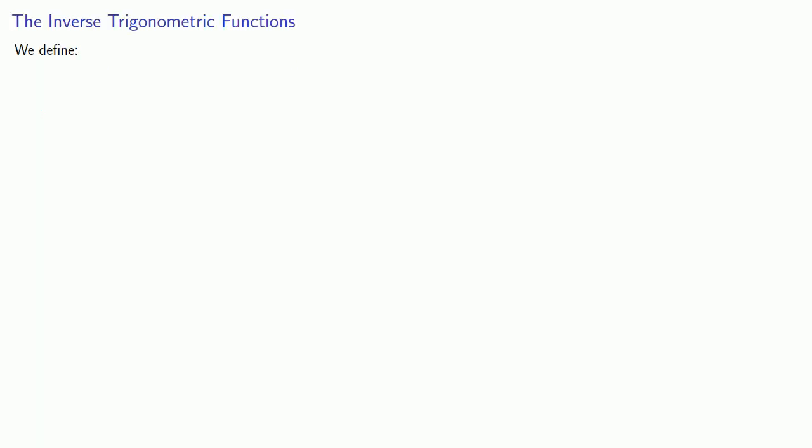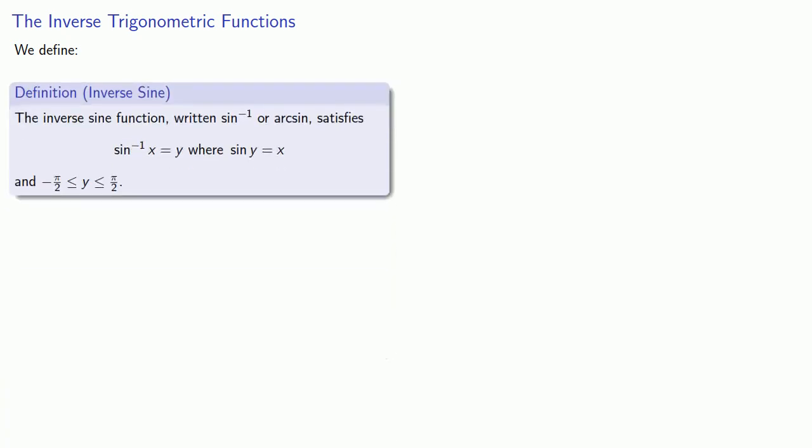This leads us to the following definition. We define the inverse sine function, written sine inverse or arcsine, which satisfies: inverse sine of x equals y, where sine of y equals x, and y is between minus pi over 2 and pi over 2.